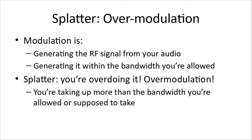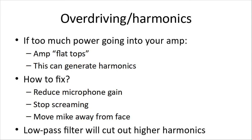Splatter is over-modulation — we generate the RF signal from our audio within the allowed bandwidth, but with splatter we're overdoing it, taking up way more bandwidth than allowed. Overdriving tends to generate harmonics: if too much power goes into your amp, it flat-tops and can't amplify the signal anymore. Fix this by reducing power into your amp, reducing microphone gain, speaking quieter, or moving the mic away from your face. A low-pass filter will cut out those higher harmonics for you.